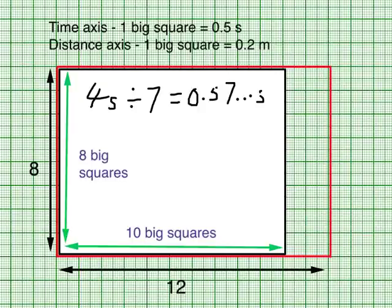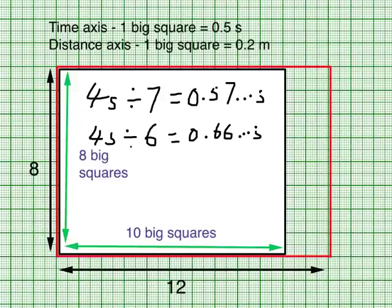What if I try 6 big squares? I'm going to get 0.66 something second. Not an easy number to plot too. Let's try 5. 4 divided by 5. I'm going to get 0.8 seconds for 1 big square. Quite an easy number to plot.